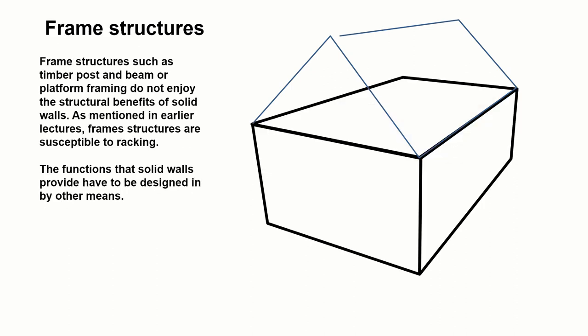Within a frame structure, which could be a post and beam structure, it could be a small member platform frame structure, or a balloon frame structure, it does not enjoy the same structural benefits as solid walls. As we mentioned in earlier lectures, frames under a load, a horizontal load or a vertical load, are susceptible to racking. So to prevent that racking, we have to design in other means of prevention.